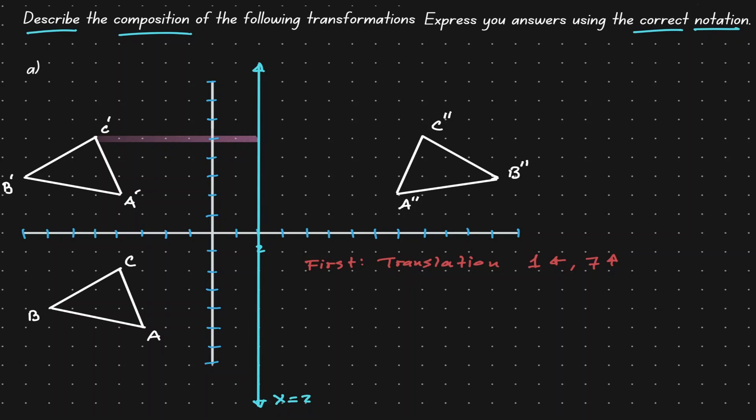So it works for B'. Now we've got to check if this also works for C'. From C' to the line of reflection, that will be 7 units. And from our line of reflection to the reflected C', that's also 7 units. So notice that this works for all three points. Therefore, we can claim that the second transformation was a reflection over the line x equals 2.